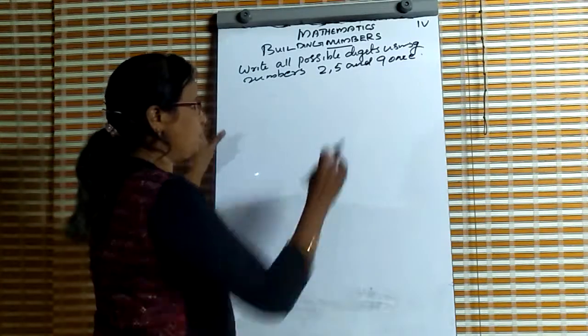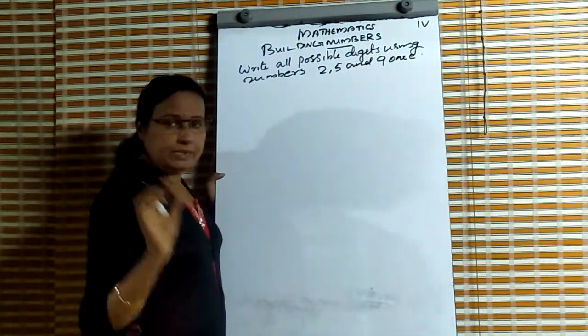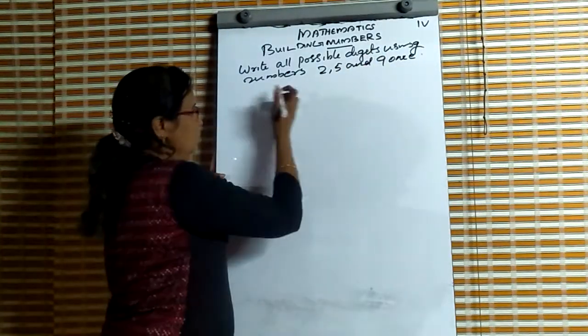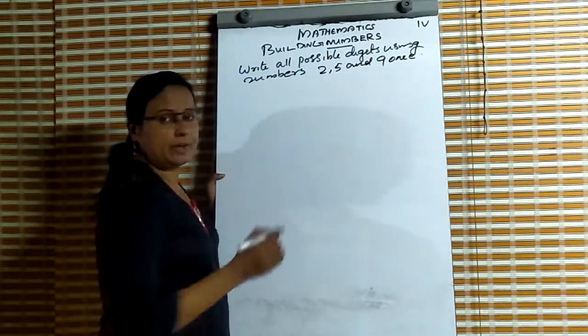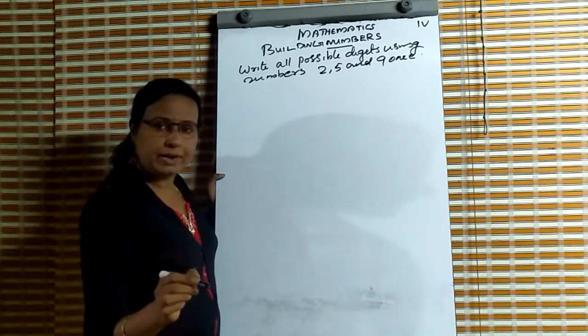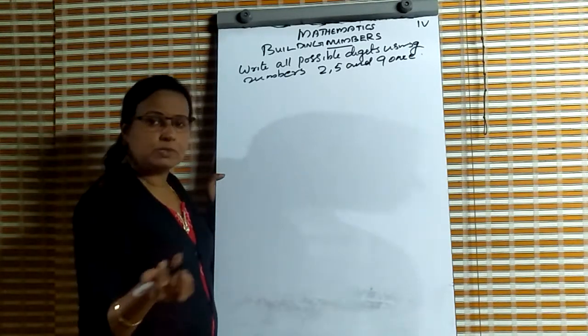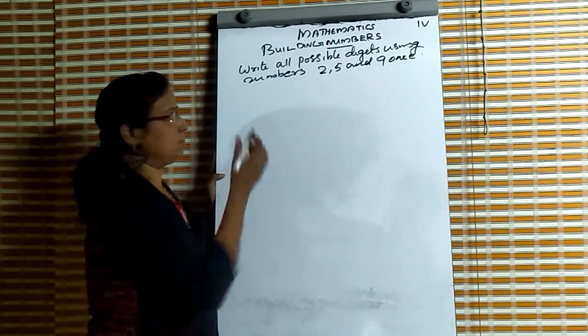Write all possible numbers using the digits 2, 5, 9. Use 2, 5, 9 to write all possible numbers.